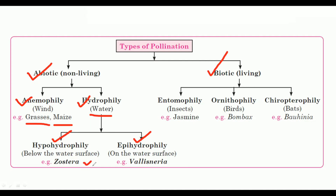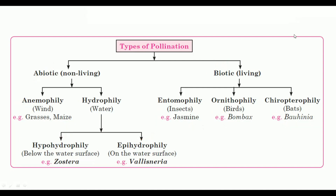Hypohydrophily occurs below the water surface. Biotic and living agents include entomophily, ornithophily and chiropterophily. These are biotic agents that help for cross-pollination. Entomophily means insect pollination — for example, jasmine. Ornithophily is by birds — for example, Bombax. Chiropterophily is pollination by bats.